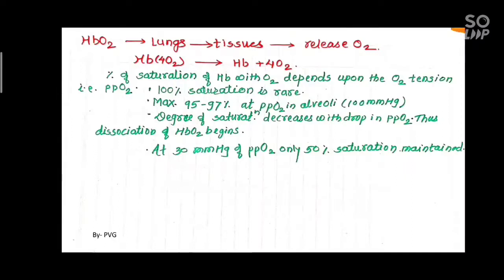The percentage or degree of saturation of Hemoglobin with Oxygen depends on the partial pressure of Oxygen, also called Oxygen Tension. 100% saturation is very rare. Maximum 95 to 97% saturation takes place at a partial pressure of Oxygen in the alveoli at 100 mm of Hg.